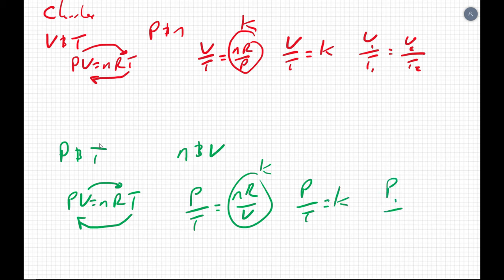So P over T equals a constant. Or P1 over T1 equals P2 over T2. This is Gay-Lussac's law. We didn't study it directly. We looked at it in a lab. But it's contained within the ideal gas law.